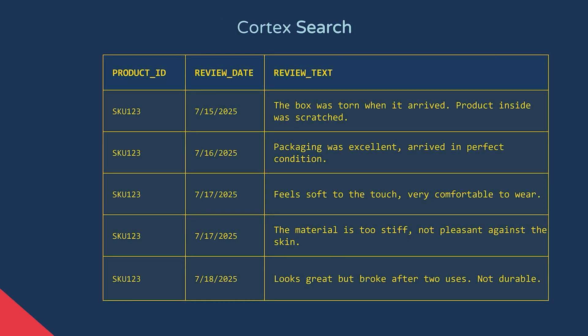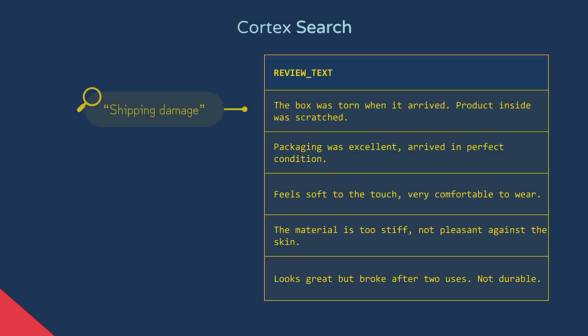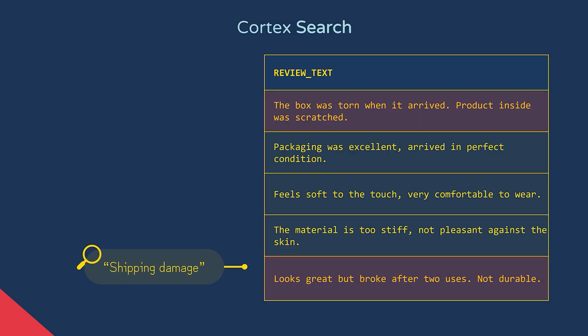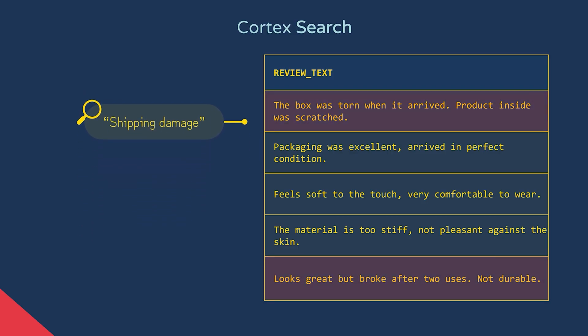Let's say you have reviews for a product you've just released and you want to search these for specific topics, like whether damage has occurred during shipping, or how someone feels about the product's texture or usability. With traditional keyword search, you'd only find reviews that include the exact words you search for. So if someone searches for 'shipping damage', they might miss reviews that are clearly relevant because they talk about things being broken or torn, but don't contain the exact phrase 'shipping damage'. This is where Cortex Search comes in.